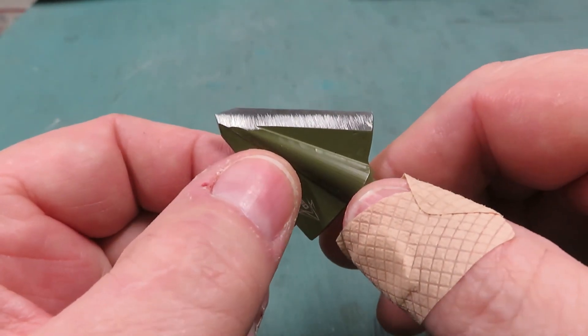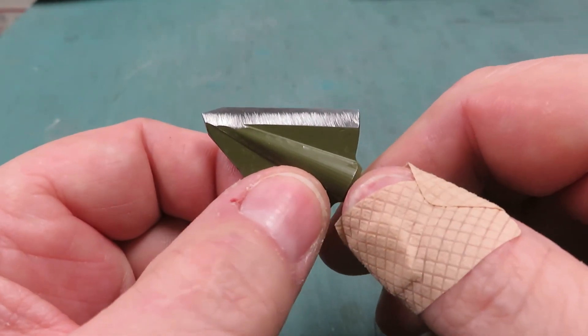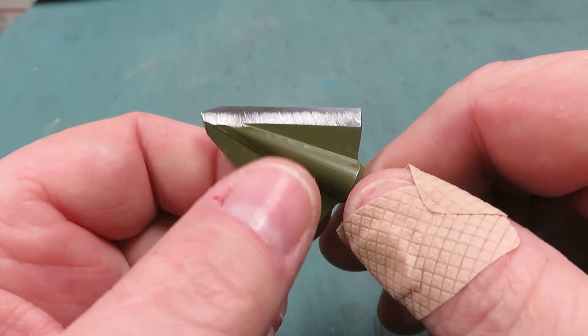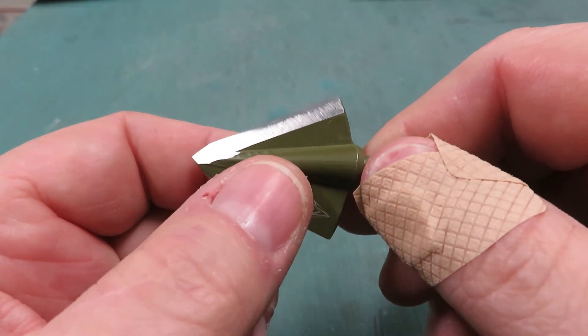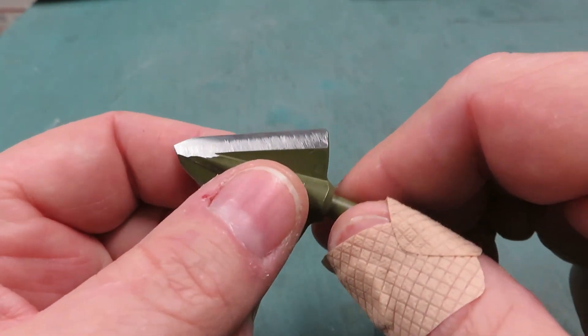We'll follow the same protocol. We'll put this under the microscope to look at the edge and then we will put it in the sharpness tester to see what the factory edge looks like. Then I will sharpen it.